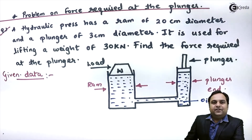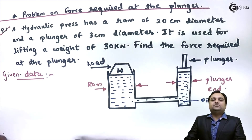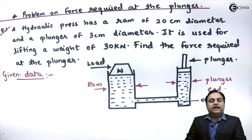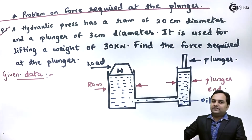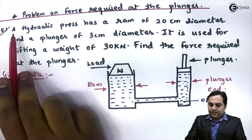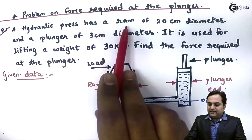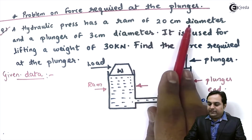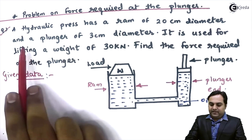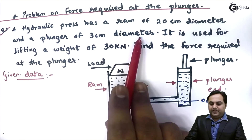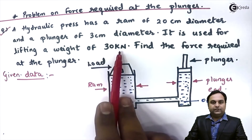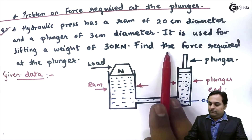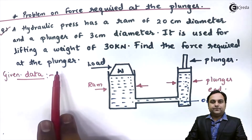Hello friends. In this video we will see the problem based on force required at the plunger. A hydraulic press has a ram of 20 centimeter diameter and a plunger of 3 centimeter diameter. It is used for lifting a weight of 30 kilonewton. Find the force required at the plunger.